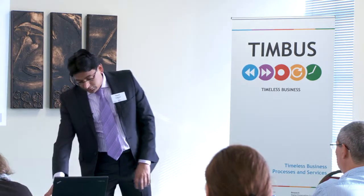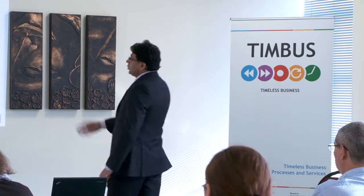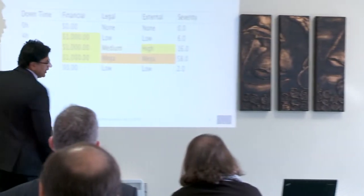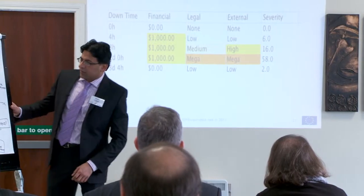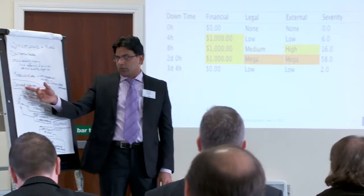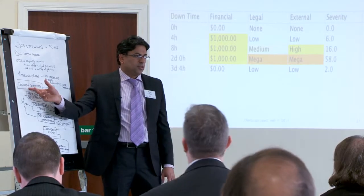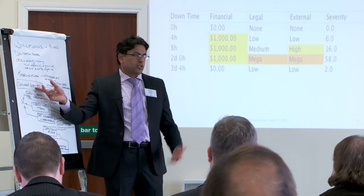Of course, we also have to identify the dependencies among all the activities or resources, which I will explain later. This shows a typical business impact table. For example, we have a sales order management process. Let's take the example where we have the first step, which is document submitted for a loan — some bank where a customer goes and submits a document to get the loan.